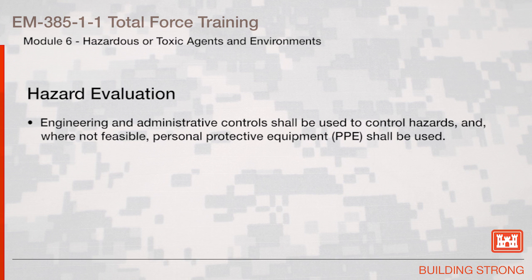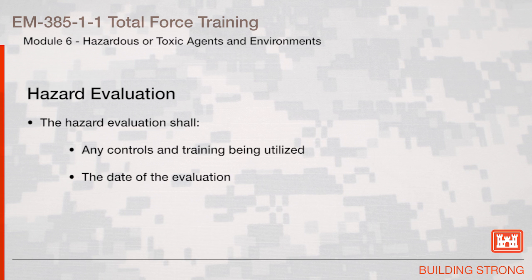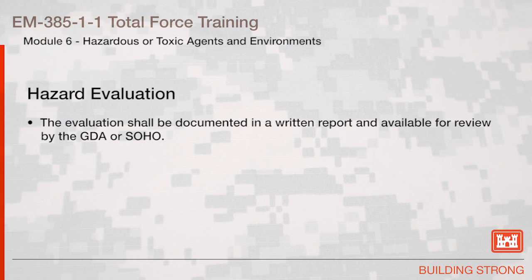Engineering and administrative controls shall be used to control hazards, and where not feasible, personal protective equipment, or PPE, shall be used. The hazard evaluation shall document the nature of the evaluation, the workplace and activity, name, position, and credentials of the person certifying that the evaluation was performed, any controls and training being utilized, and the date of the evaluation. The evaluation shall be documented in a written report and available for review by the GDA or SOHO.